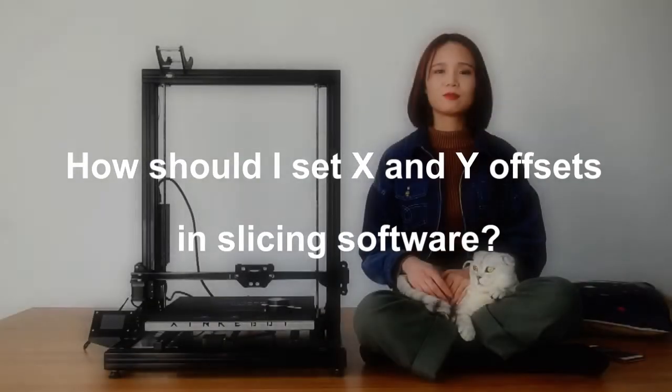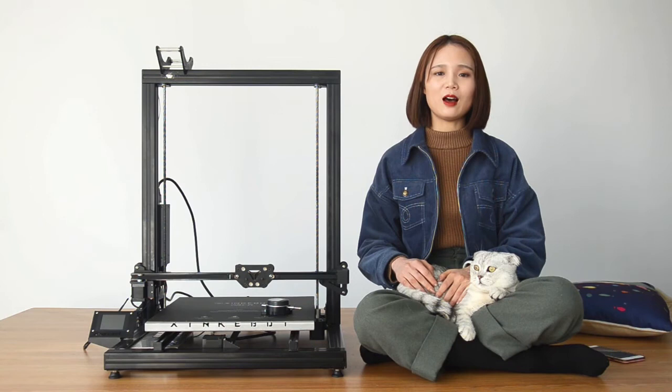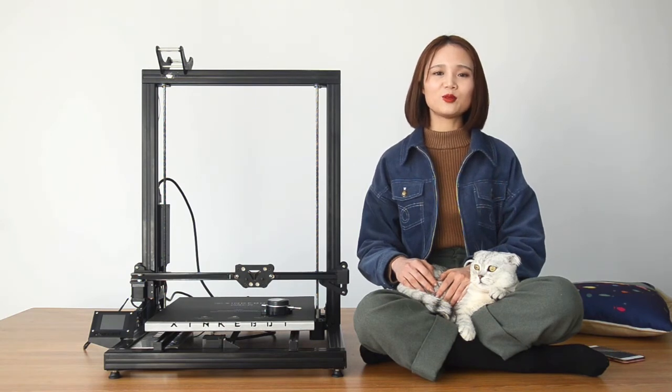You can just leave them aside, zero for both, as the X and Y offsets are preset in the firmware before the printer is shipped to you.